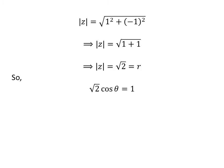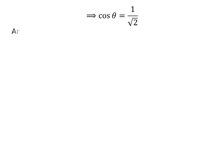As we know, r times cosine of theta is equal to 1, so square root of 2 times cosine of theta is equal to 1. Dividing by square root of 2 gives cosine of theta equal to 1 upon square root of 2. Similarly, we get sine of theta equal to minus 1 upon square root of 2.